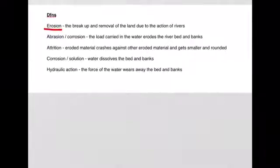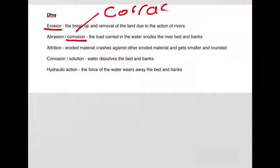The first type is called corrasion. I see there's a spelling mistake here. That should be spelt C-O-double R-A-S-I-O-N. It can also be called abrasion and this is the load carried in the water which erodes the riverbed and banks. So essentially we have little stones and pebbles and boulders which are carried along in the current and these bash off the riverbed and banks and wear away the riverbed and banks. That's process number one.